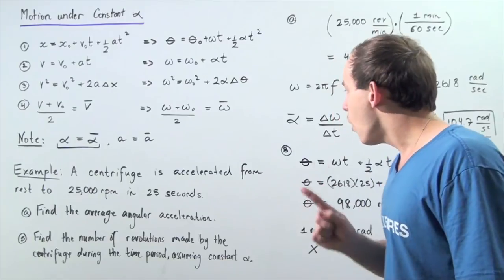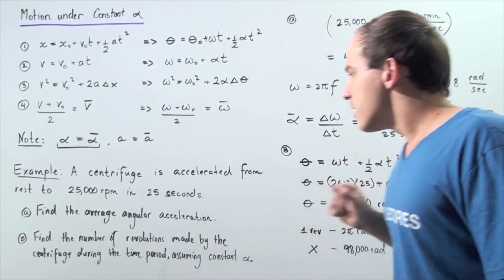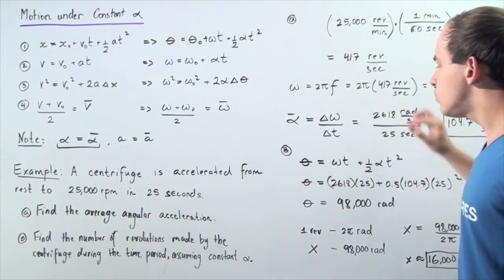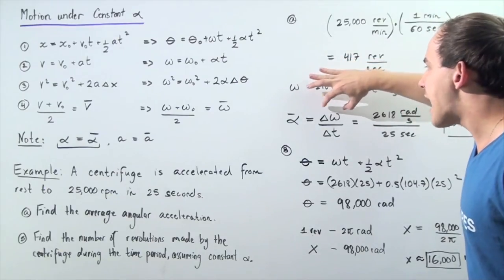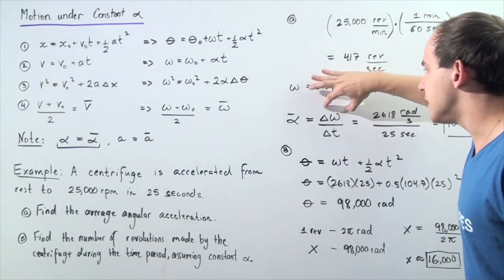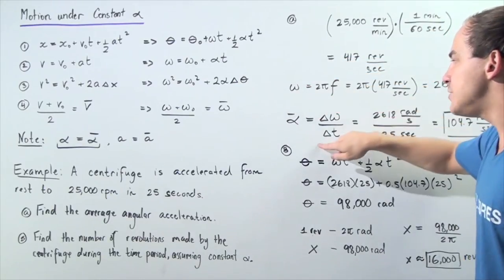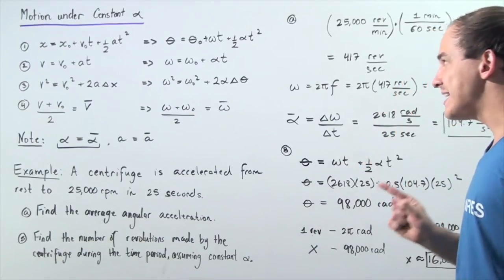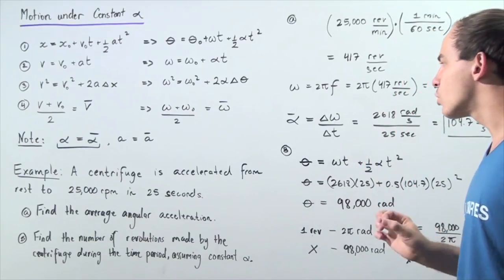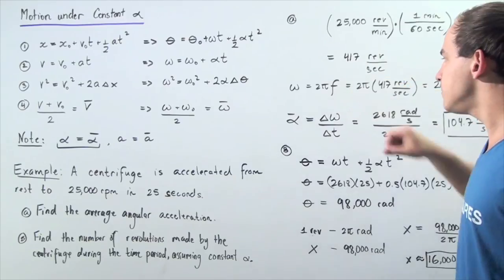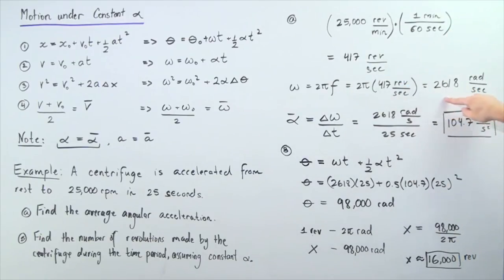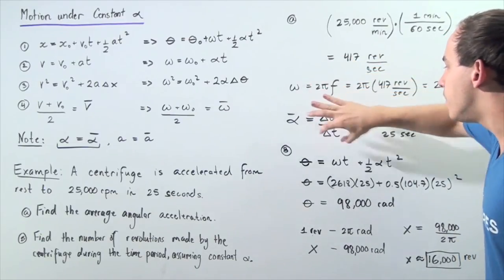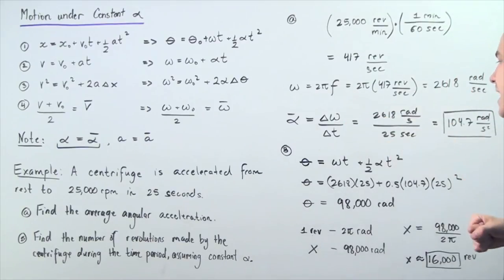By definition, the average angular acceleration is equal to the change in angular velocity divided by change in time. Our initial angular velocity is zero, so we simply plug in 2618 into the numerator and the denominator becomes 25 seconds.